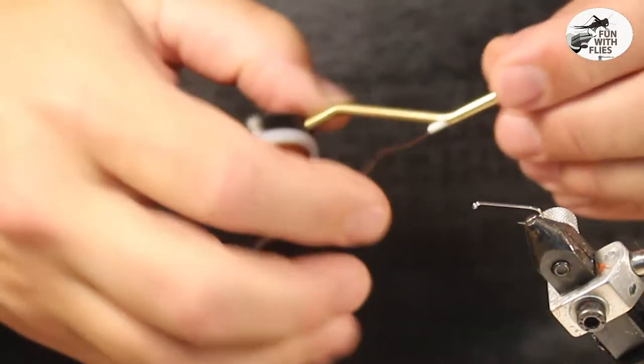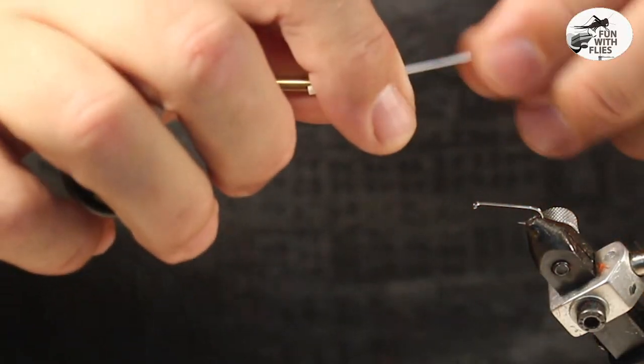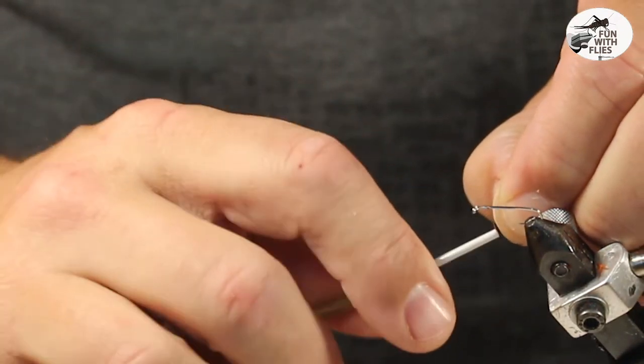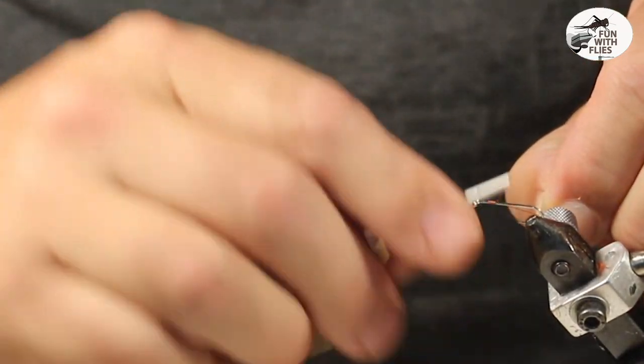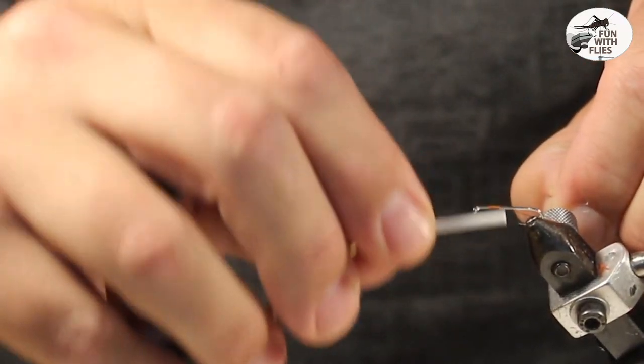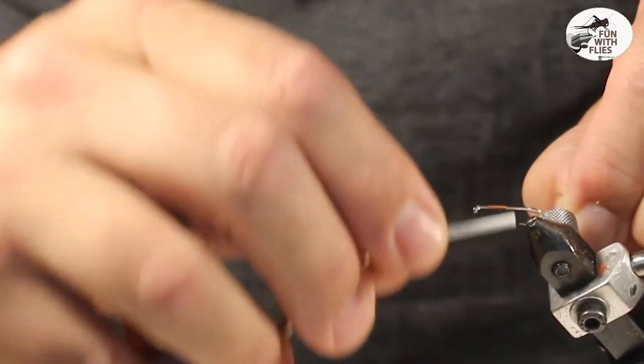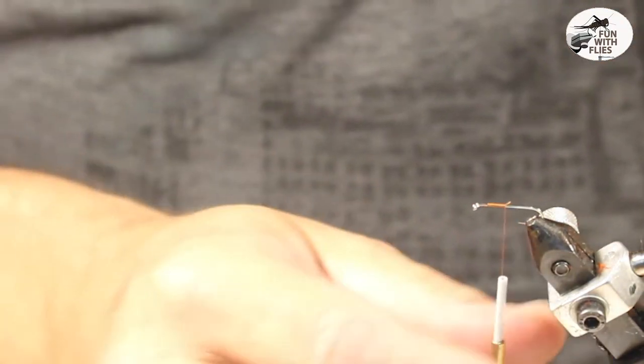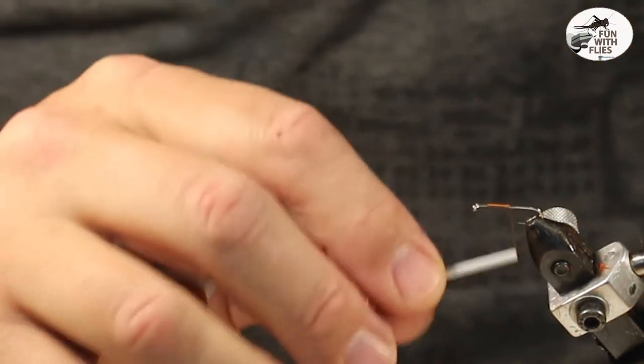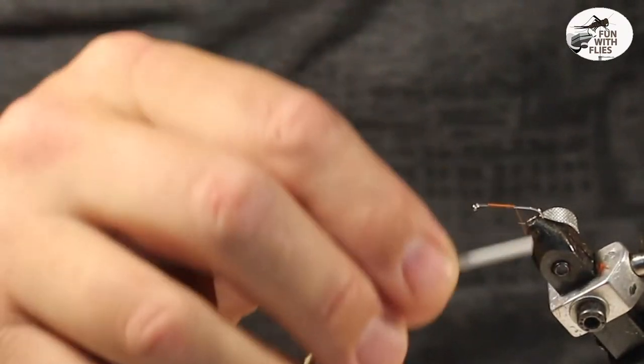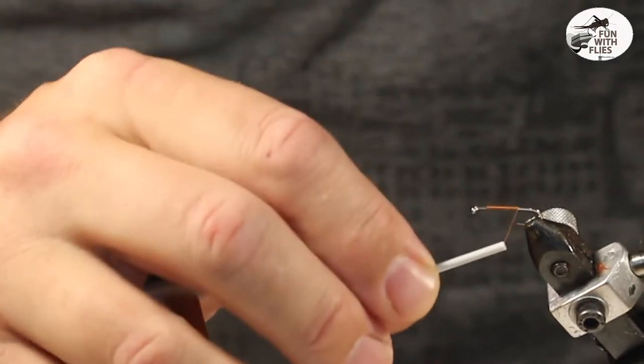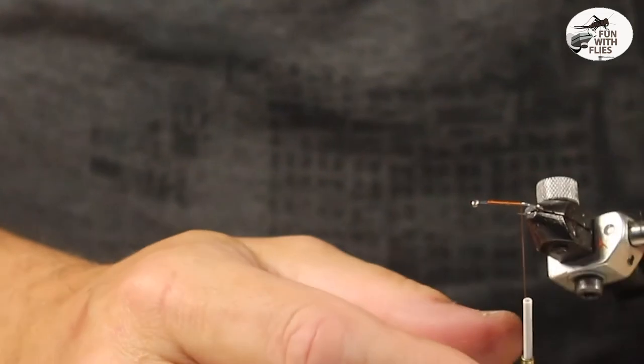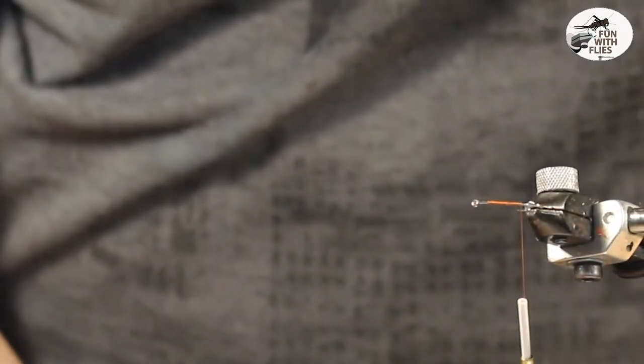So I'm going to go ahead and wrap it. I'm going to stay about maybe two eye lengths off right here. And I'm going to go ahead and wrap it right to the gap, maybe a little past it. I want it to unwind completely, flatten the thread out.